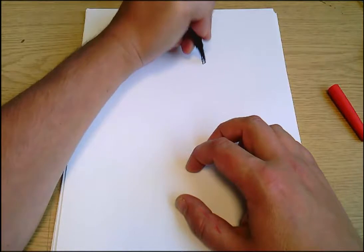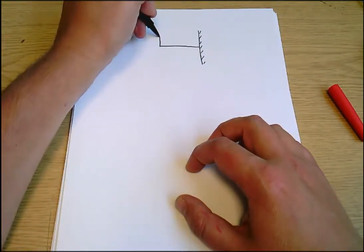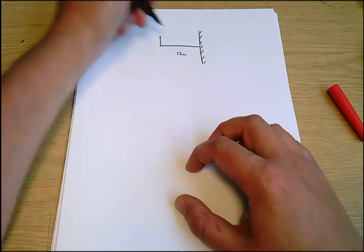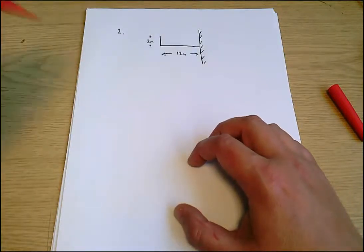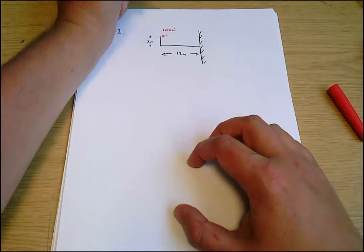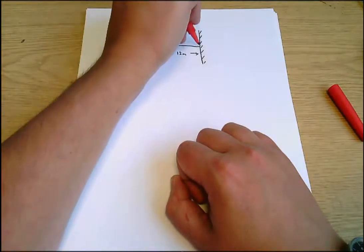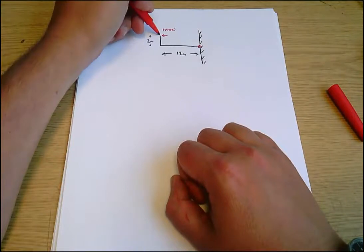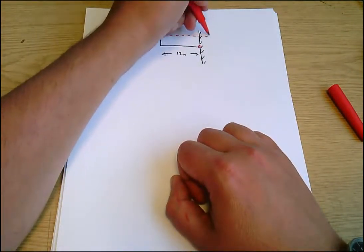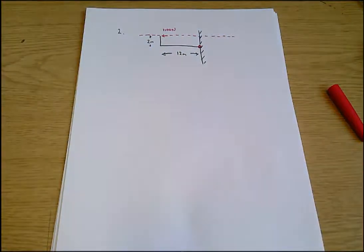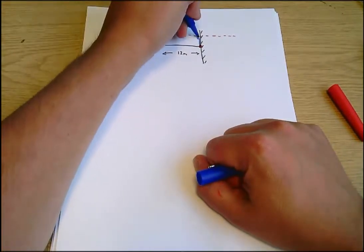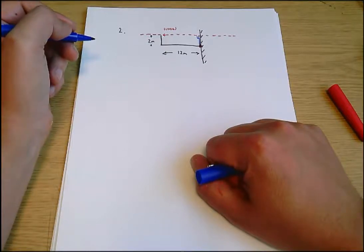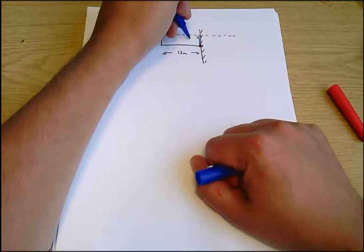Question two. Again, start by drawing out the diagram — this time the directions are slightly different. We've got 12 meters there, 2 meters there, and a force of 1100 newtons. We mark on that that is the pivot we're interested in. It doesn't matter where the force is applied; we're simply interested in the direction of the force. So we extend that line out imagining it was infinitely long and then find a perpendicular distance back to the pivot. That line is at a right angle to the direction of the force and goes through the pivot, and its length is 2 meters.